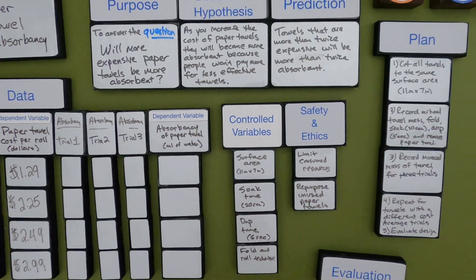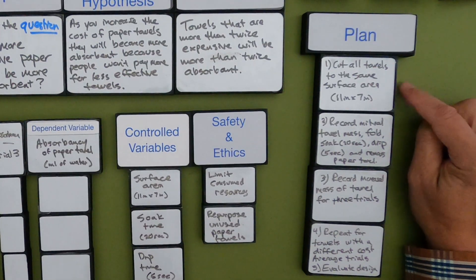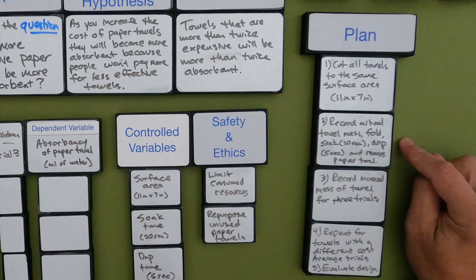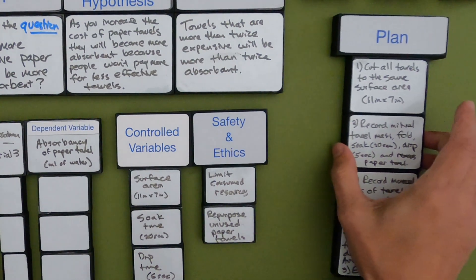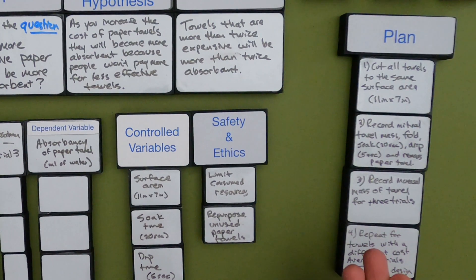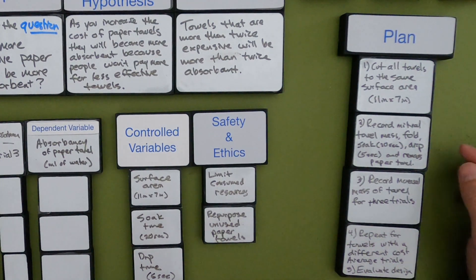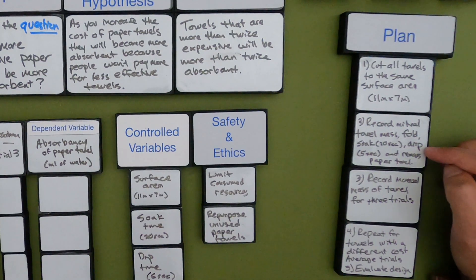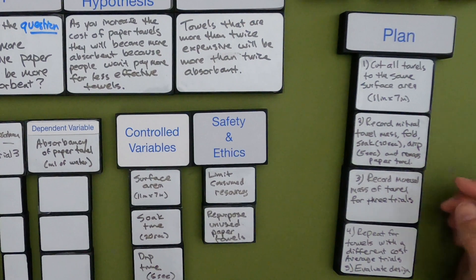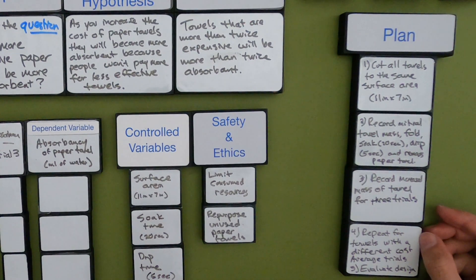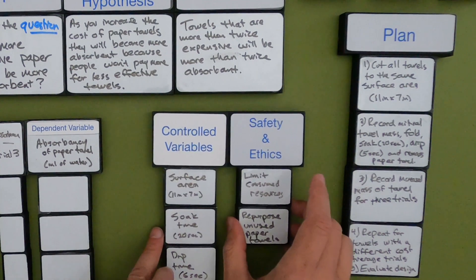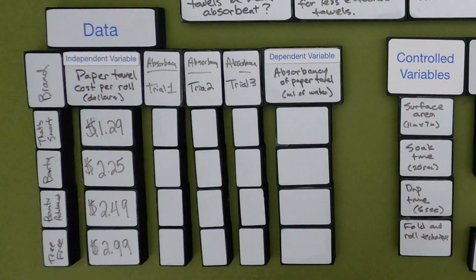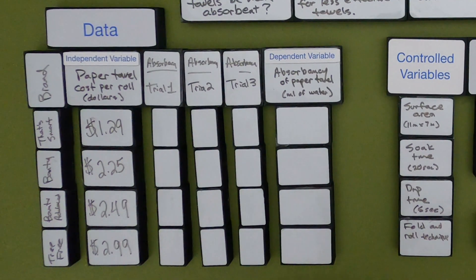Now I've got a plan: cut all towels to the same surface area, record the initial towel mass — it's easier to use mass since the mass of water equals the volume in grams per milliliter — fold them, soak for 20 seconds, drip for 5 seconds, then re-mass the paper towels. Record the mass for 3 trials and repeat for the other towels. When done, evaluate the overall design. Since we can't do this experiment together right now, let me put down the results I gathered earlier and we can talk about evaluating the design.